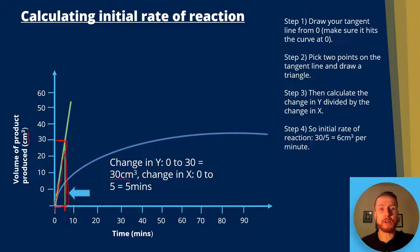Step four: the initial reaction rate is then going to be the change in y divided by x, which is 30 divided by 5, which gives us 6 centimeters cubed per minute. And I took that centimeters cubed from the y-axis and the minute from the x-axis. You've got to use the units you're given.